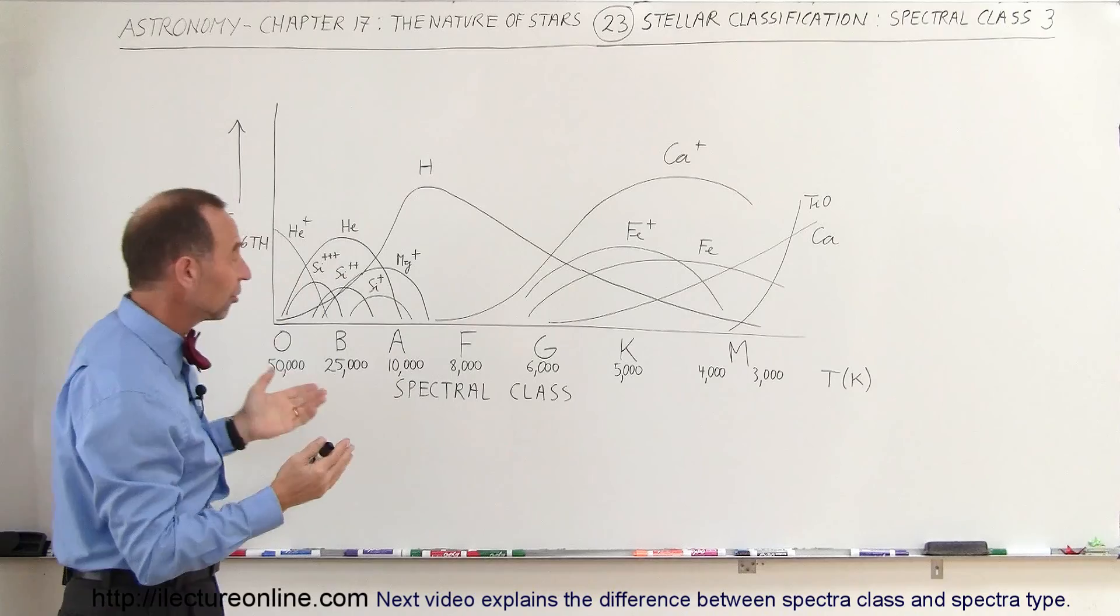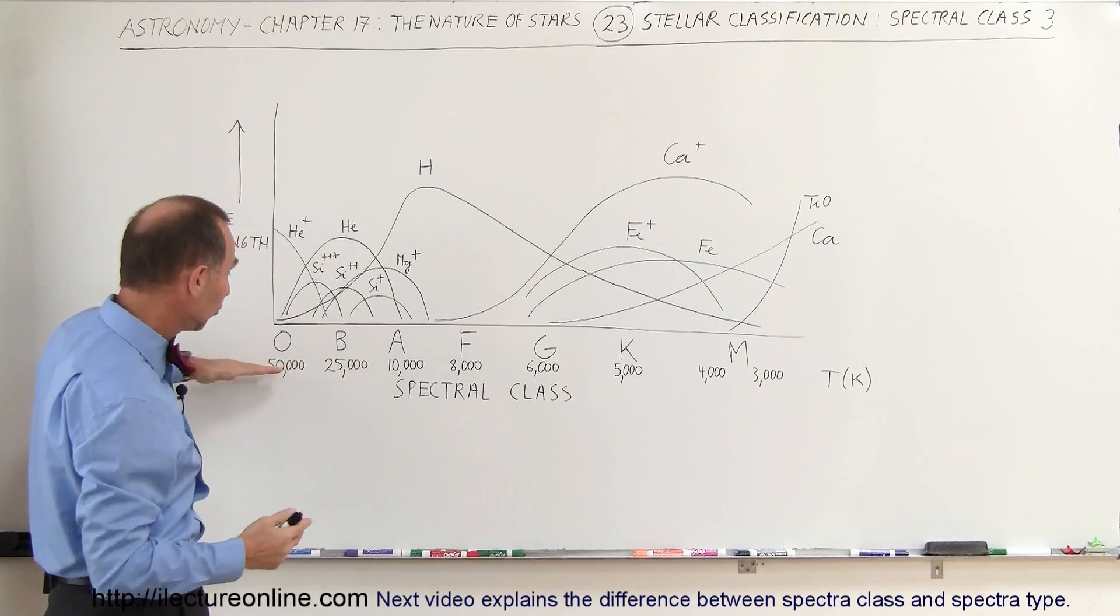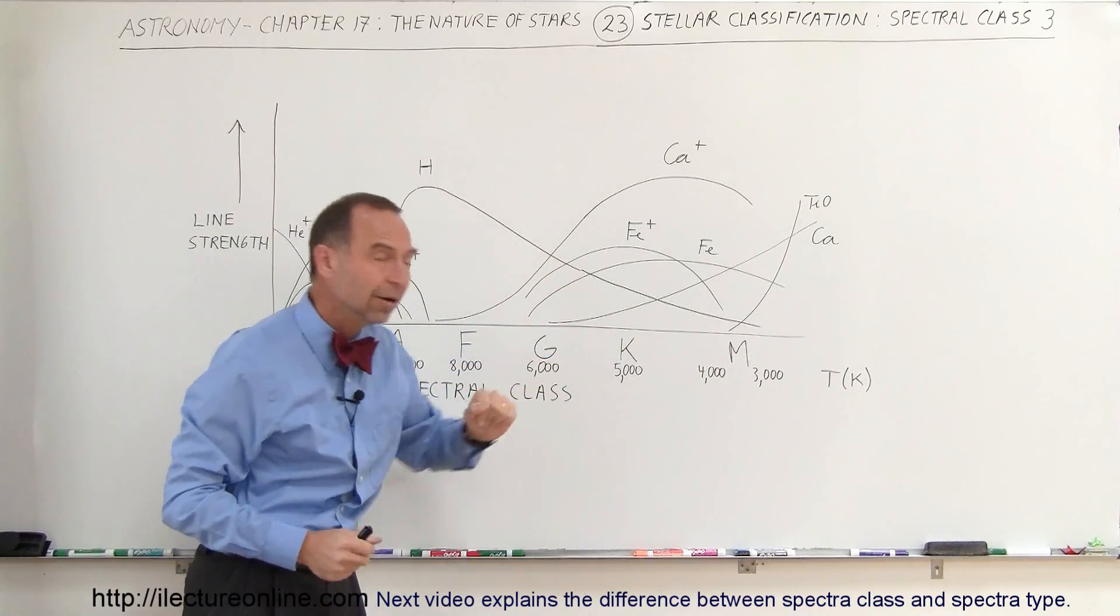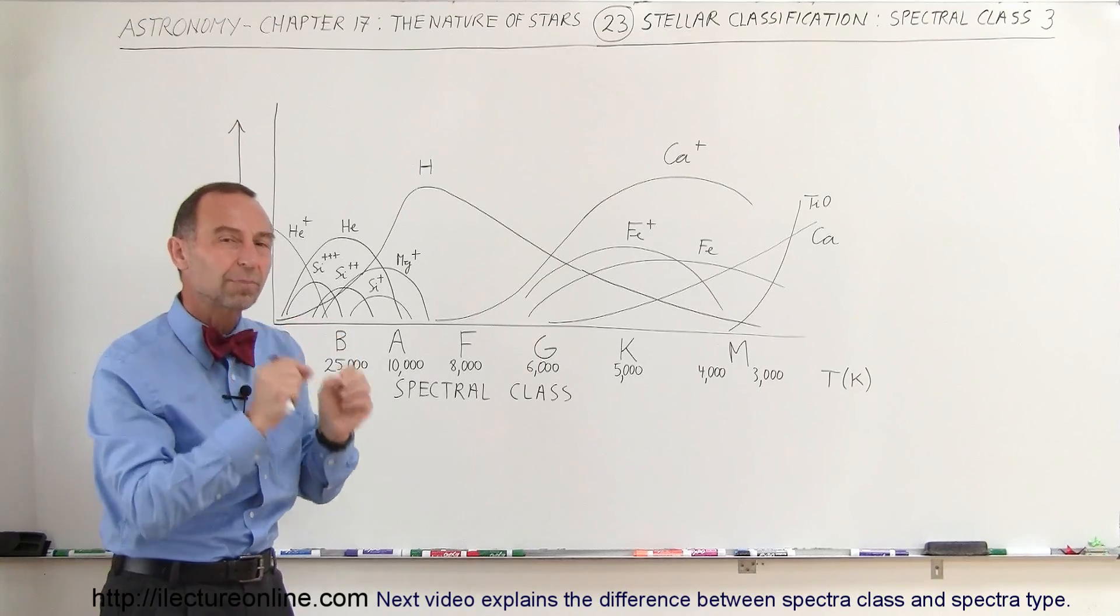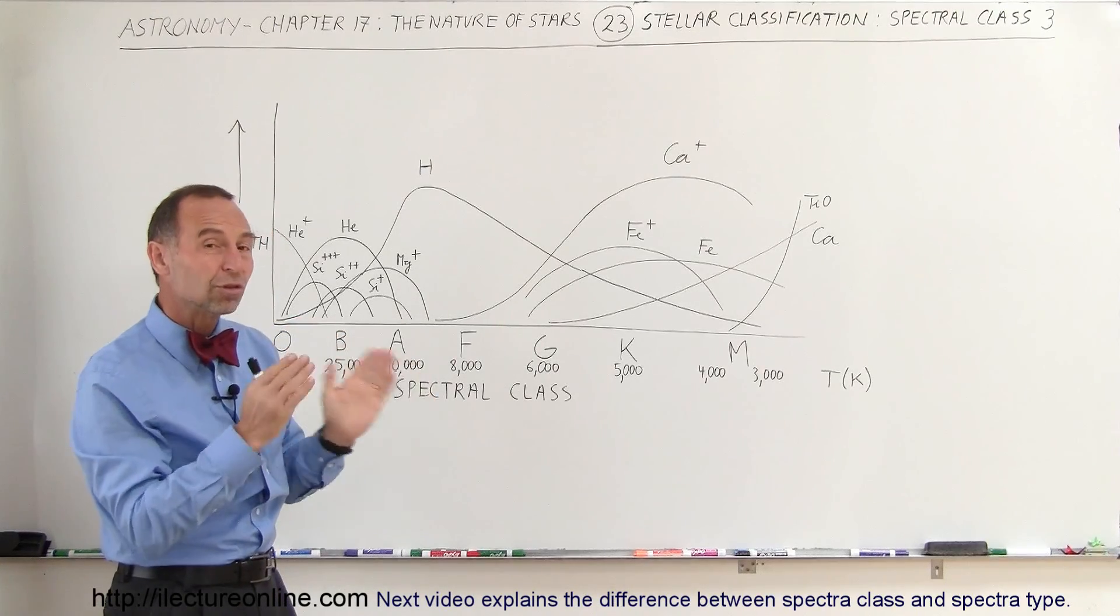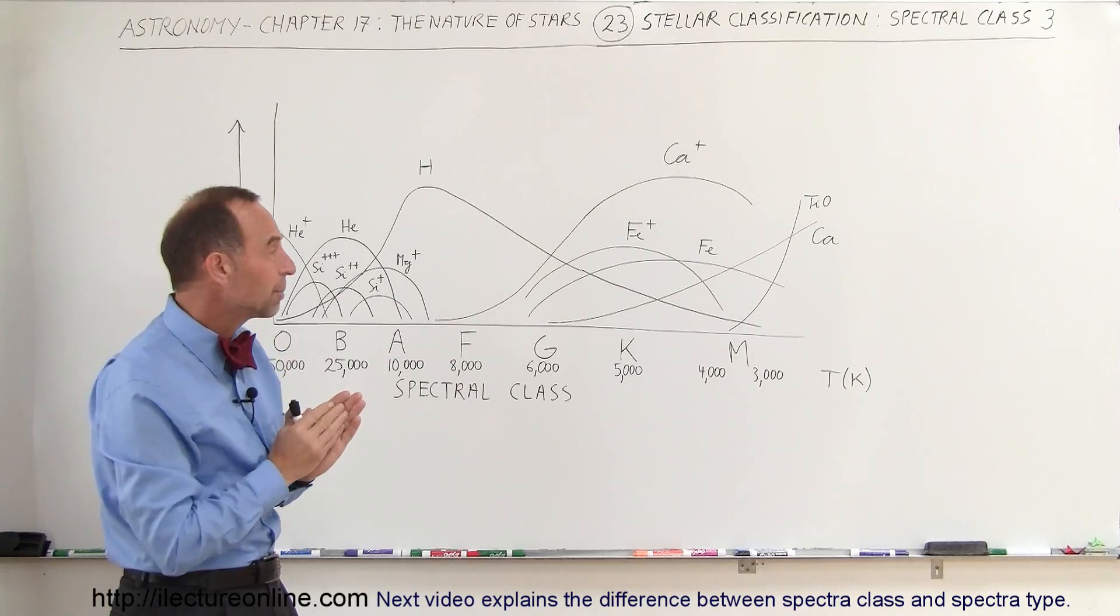Not only do we determine the class star by the surface temperature, which is associated with these classes, we can also do it by looking at the spectrum and doing an analysis on the spectrum, noticing which dark lines appear strong and which appear weak.